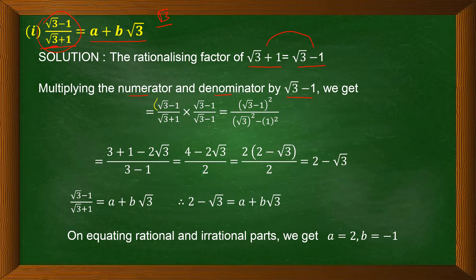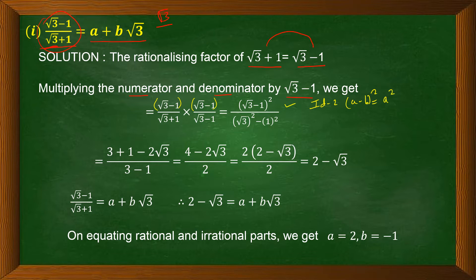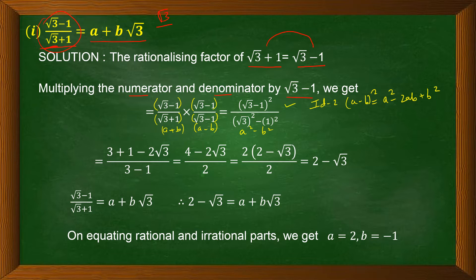In the numerator, (√3 − 1) multiplied by the rationalizing factor (√3 − 1) gives (√3 − 1)², which uses Identity 2: (a − b)² = a² − 2ab + b². In the denominator, (√3 + 1)(√3 − 1) uses Identity 3: (a + b)(a − b) = a² − b². In both cases, a = √3 and b = 1.